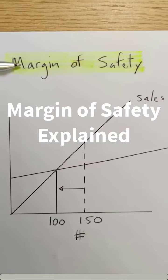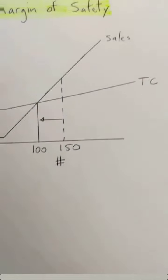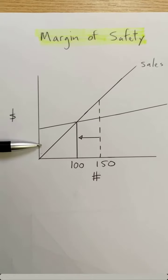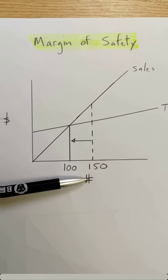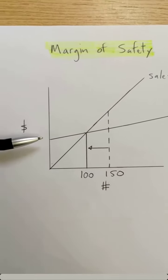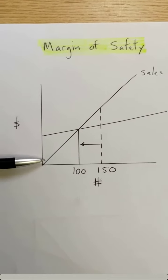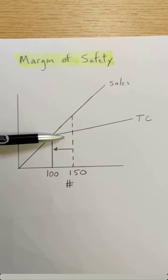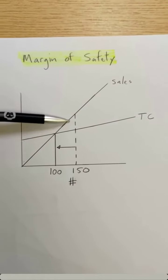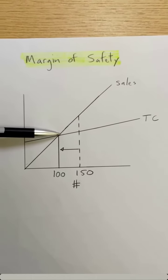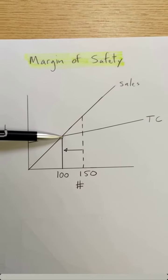Let's look at margin of safety. I have a break-even chart here. Units are on the x-axis, costs and revenues are on the y-axis. Total cost is here, sales are here. Break-even point is when my sales are equal to